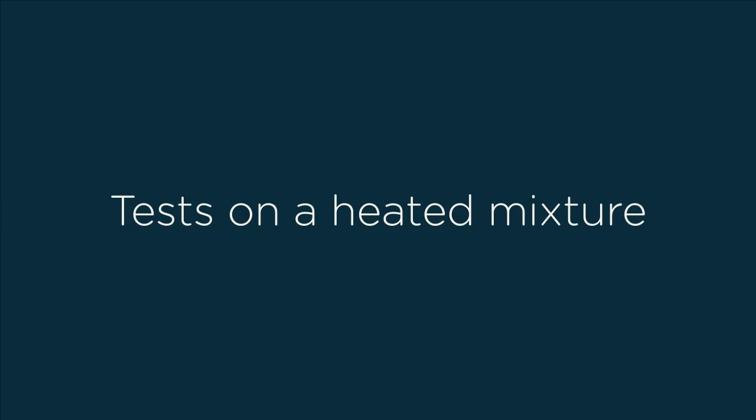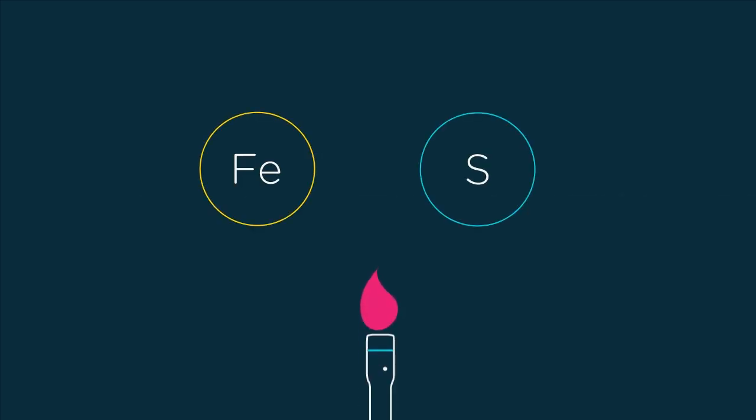Finally, let us perform the same four tests on a heated mixture of iron and sulfur. Heating the mixture of iron and sulfur causes the iron and sulfur to bond chemically to form the compound iron 2 sulfide. Now, let us look at how the compound iron 2 sulfide behaves in the four tests.